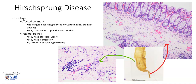Conversely, in the normally innervated proximal dilated segments, we would see the presence of ganglion cells within the nerve plexuses. In the proximal bowel, sometimes there may be longitudinal ulcers due to fecal impaction, there may also be perforation, and sometimes smooth muscle hypertrophy.